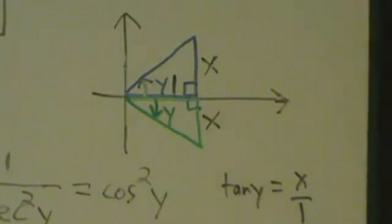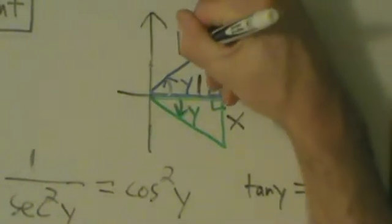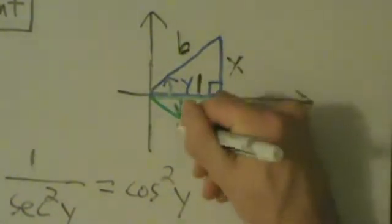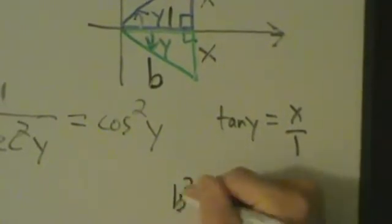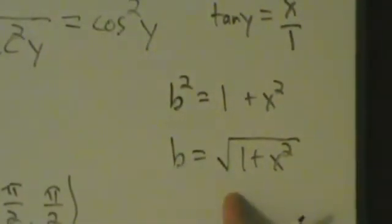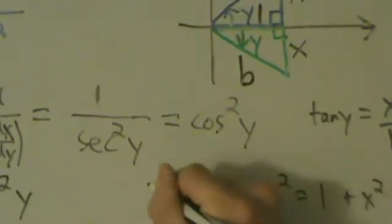So what's the hypotenuse? Let's call it b. Since both triangles have legs x and 1, the hypotenuse b is the same in both cases. By the Pythagorean theorem, b squared equals 1 squared plus x squared equals 1 plus x squared, so b equals the square root of 1 plus x squared. Because it's a hypotenuse, it has to be the positive root. As we're about to see, it actually won't matter anyway.